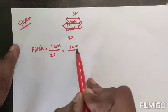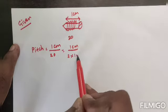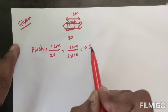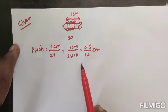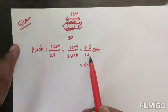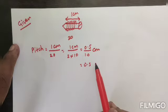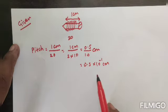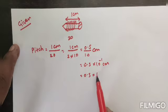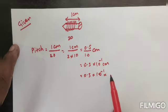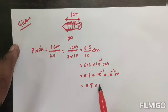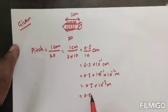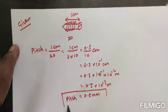So pitch = 1 centimeter divided by 20. We can write 20 as 2 × 10, giving 0.5 divided by 10, which is 0.5 × 10⁻¹ centimeter. Since 1 centimeter = 10⁻² meter, this becomes 0.5 × 10⁻³ meter, which is 0.5 millimeter. So the pitch of the given screw gauge is 0.5 millimeter.